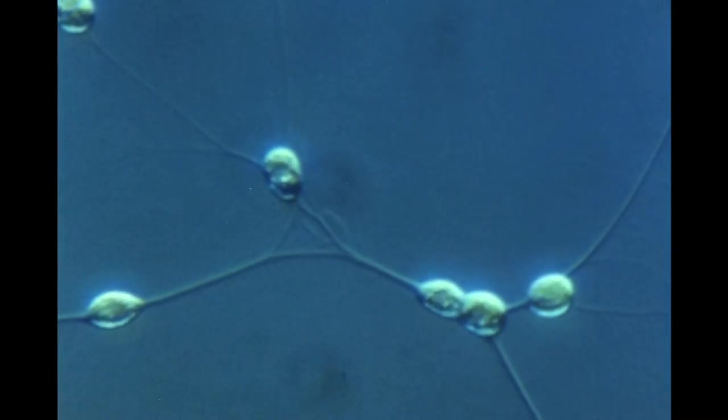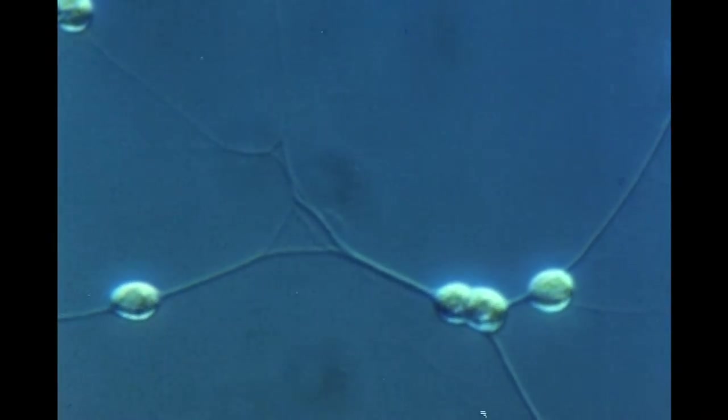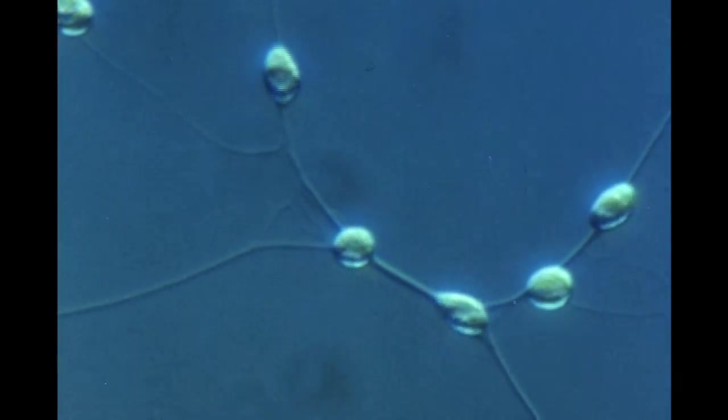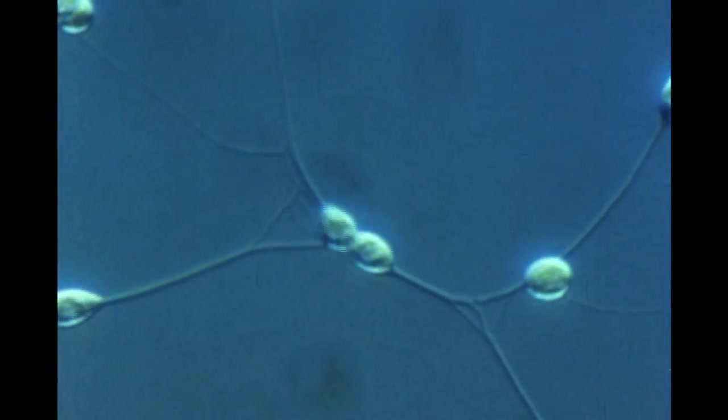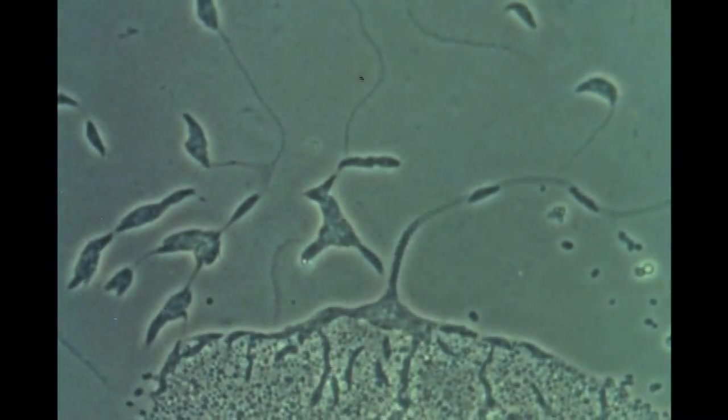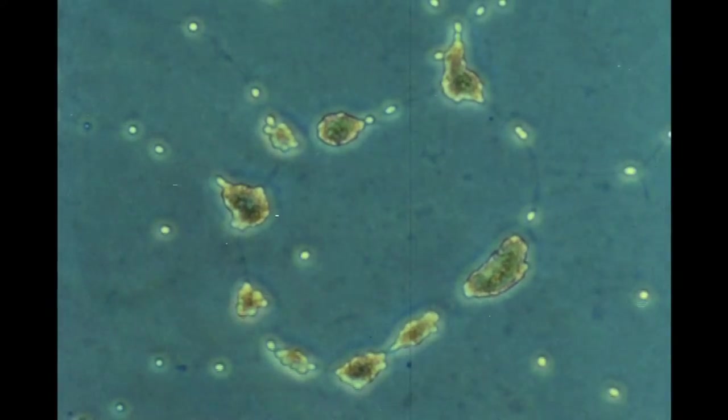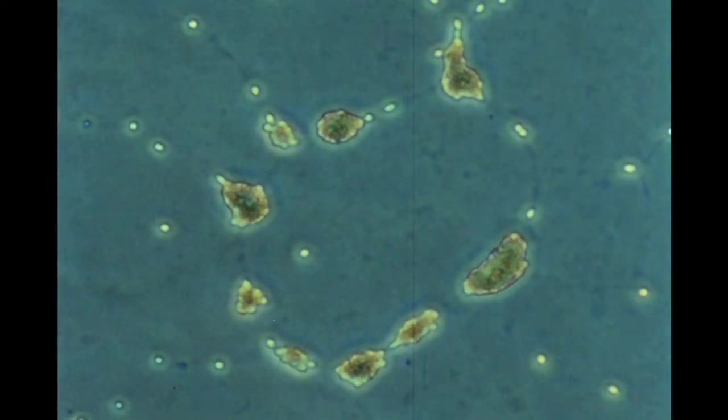Simple colonial organization in labyrinthula is exhibited by cell motility within a preformed extracellular network, movement directed toward a food source, and primitive aggregation of cells.